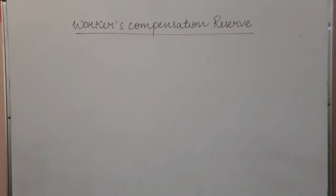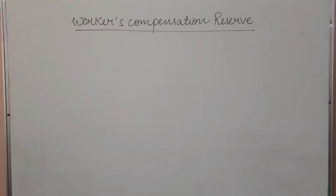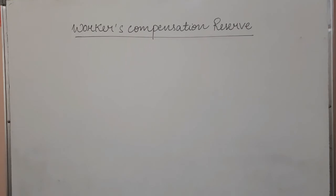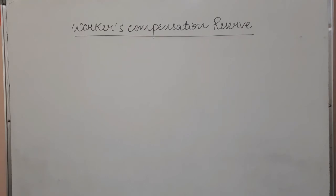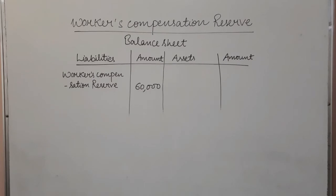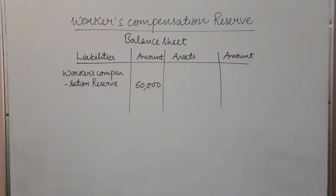If the workers' compensation reserve has been given in the balance sheet, or a condition is given, then how will you settle it? This condition is common for admission, retirement, death, and change in profit sharing ratio. The workers' compensation reserve is an amount set aside to settle any mishap that occurs with a worker.